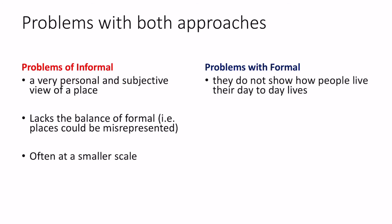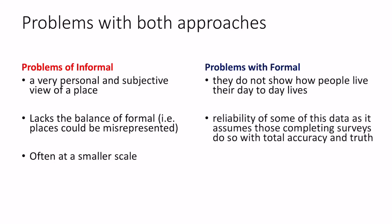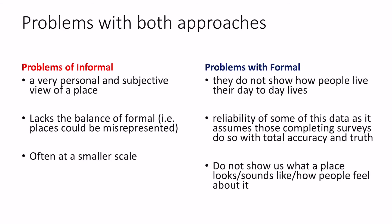Formal representations don't actually show us how people live their lives — they are very objective, showing people as numbers, so we can't see what it's really like to live in an area. They also rely heavily on the data being accurate, and some people don't always fill in surveys truthfully. A famous example: in the 2011 census, nearly 175,000 people claimed their religion was Jedi Knight from the Star Wars franchise. Finally, formal representations don't show us what a place sounds and looks like or how people feel about it. So there are pros and cons to both approaches, and how we represent a place will affect how people perceive it.